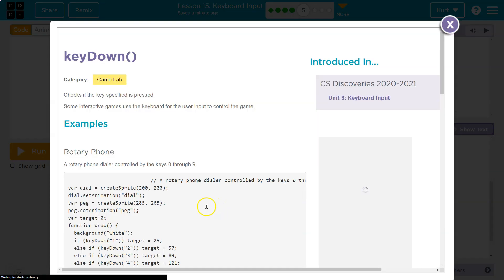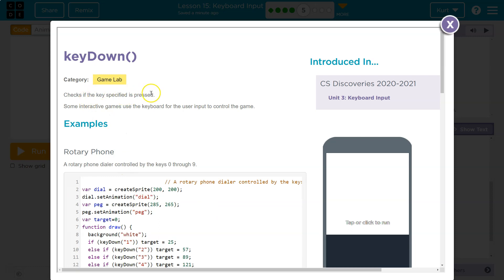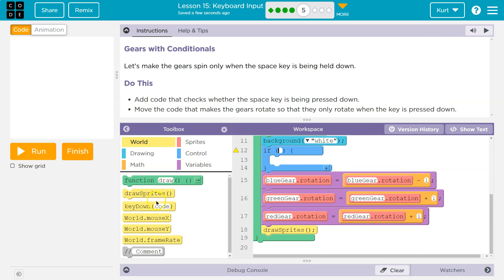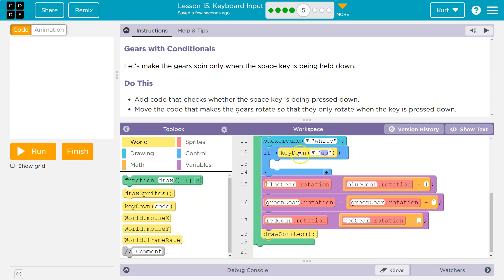See examples and it will tell me here checks if a specific key is pressed and it responds with a boolean, right? It will say true or false. So I can drop this directly in my if key down. Nope, not the up key, right? We want the space key.